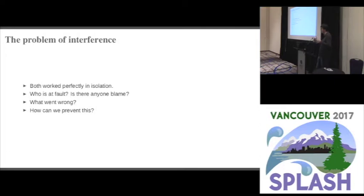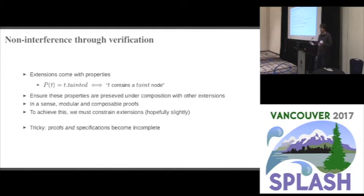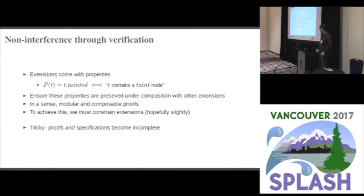This is behavior we want to prevent. The problem is these extensions did work in isolation — it wasn't until we composed them together that a problem became evident. We don't know who's at fault. The approach we take is to think about things from a verification perspective: we take extensions as coming with properties that specify how they will behave. For example, in the taint extension the 'tainted' attribute should evaluate to true if the tree t contains a taint node. What we want to ensure is that these properties stay true even under composition with unknown other extensions — modular and composable proofs, so extension developers can prove something about their extension and it's still true even as we compose with others.